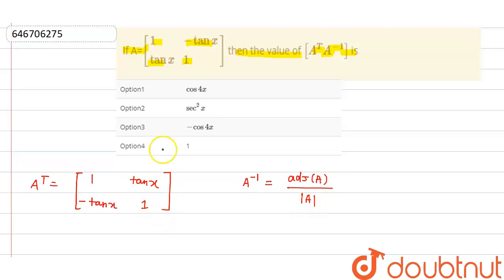Now determinant of A can be given as what? This will be multiplied something like that. So it is what? Determinant of A is equal to what? 1 minus this is what minus tan square x. This means what? Plus tan square x. And we know that this is equal to what? Sec square x.